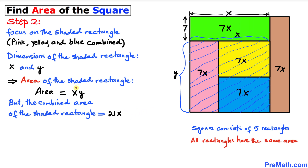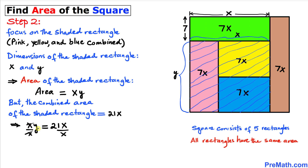Therefore we equate these areas: x times y equals 21x. Dividing both sides by x, the x's cancel out, and we get y equals 21 units.